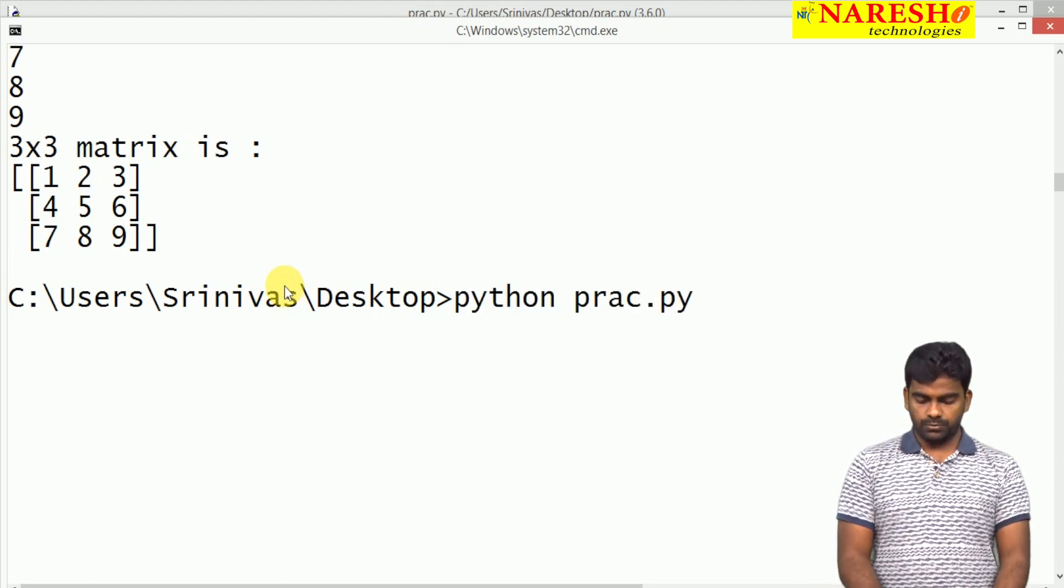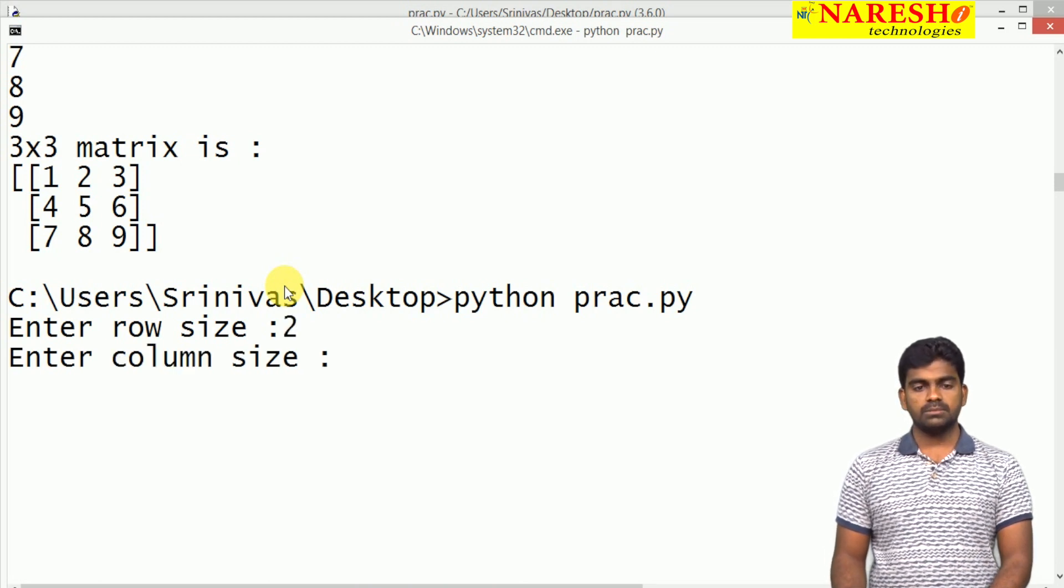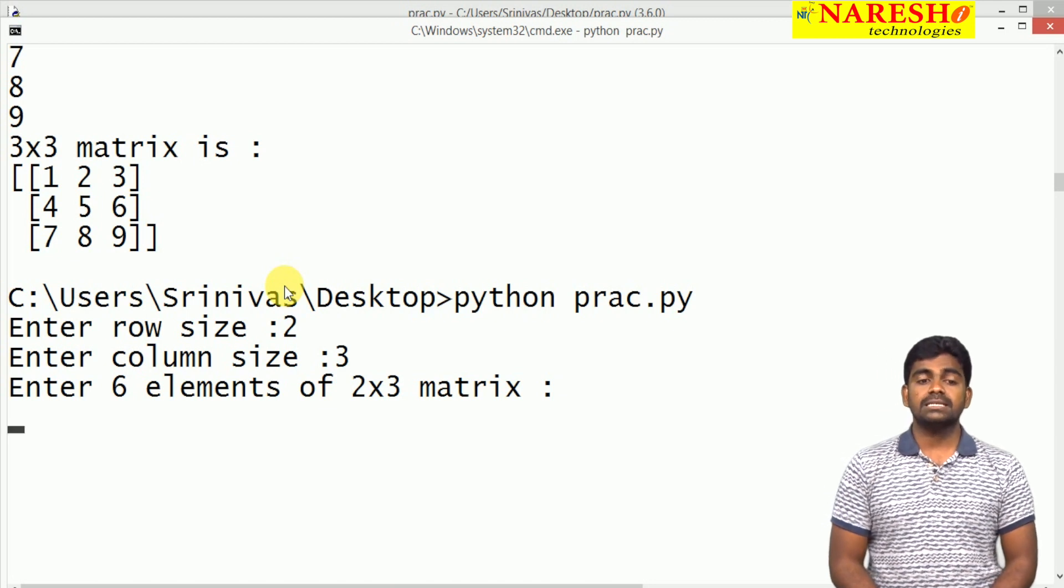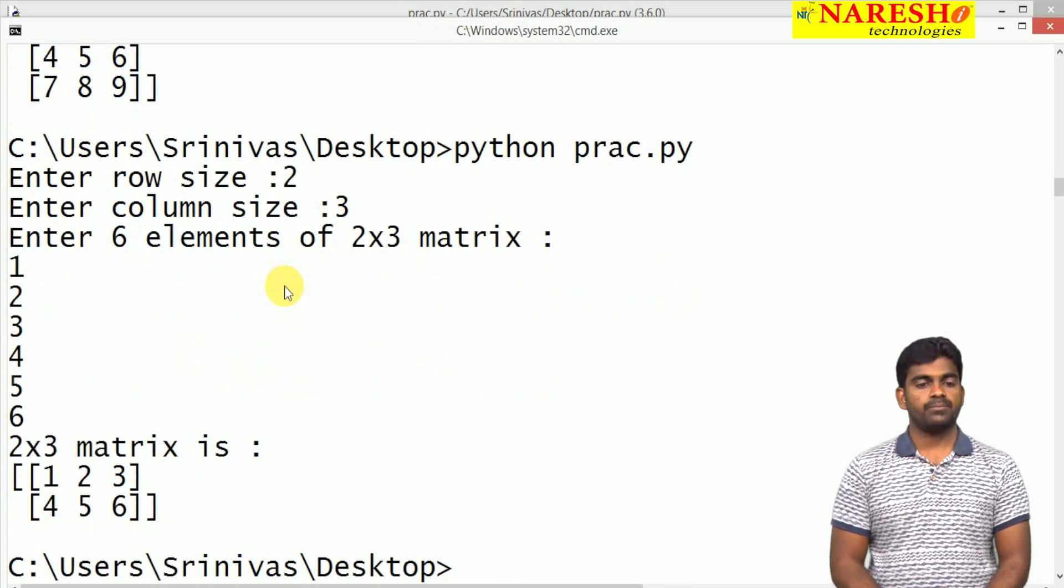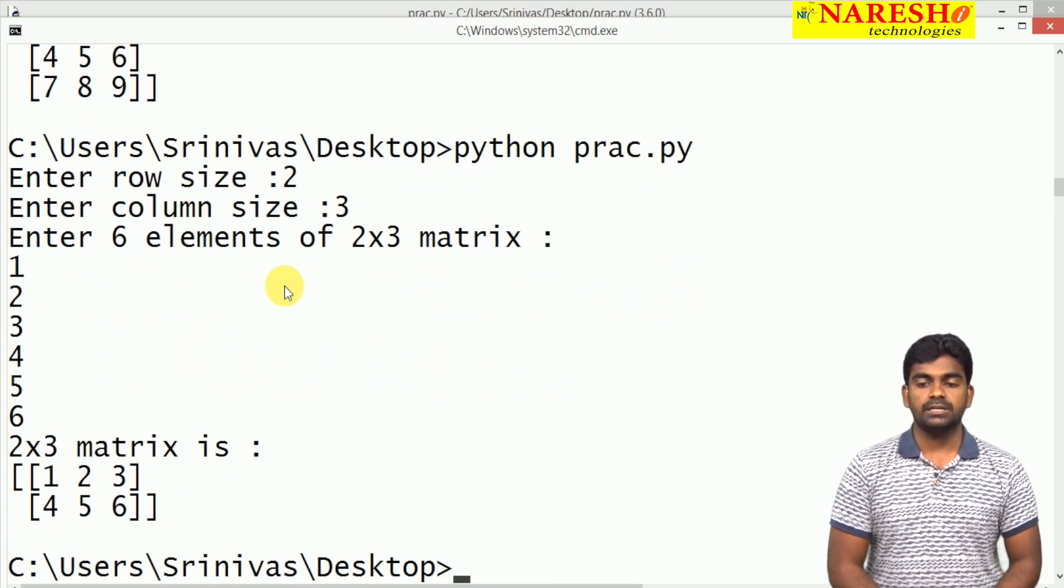For example, once again we are executing this code. Row size suppose is 2, column size is 3. Then 2 by 3 is nothing but 2 into 3, 6 elements. So 1, 2, 3, 4, 5, 6. Here it is a 2 by 3 matrix: 2 rows and 3 columns it is mentioning clearly.